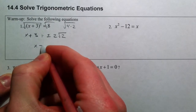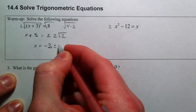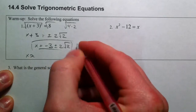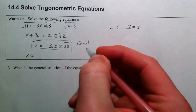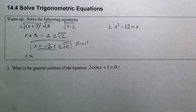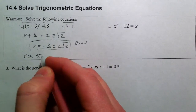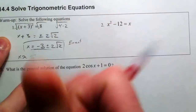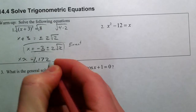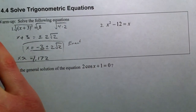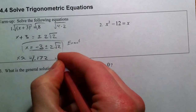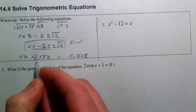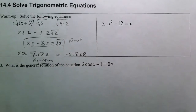If you subtract the 3 from both sides, you end up with negative 3 plus or minus 2 square root of 2. Now, you could approximate this — this is what we call the exact answer. Or you could approximate it: negative 3 plus 2 square root of 2 is approximately negative 1.172. And if you subtract, you get negative 5.828. So those are the approximate answers, depending on what you're being asked.